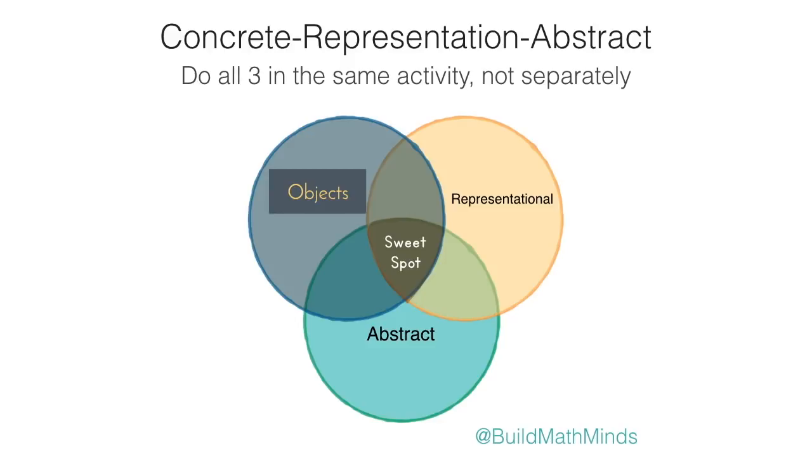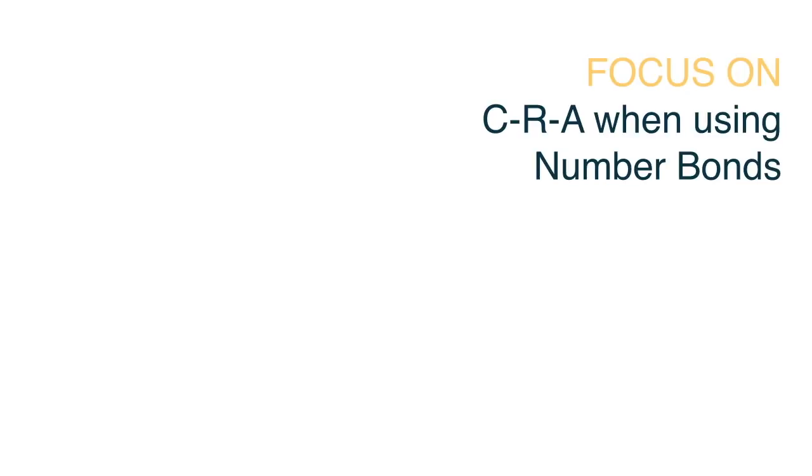So again, the concrete is when they're using objects. So have them physically put objects inside of their number bonds, have them draw visuals inside of their number bonds, and then we attach those symbols to it. So I want you to really evaluate how is your curriculum using number bonds? Are you jumping straight into the symbols? If so, you got to backtrack a little bit, because no matter what grade level your kiddos are on, you need to focus on using CRA, concrete, representational, and abstract, when they're doing number bonds.